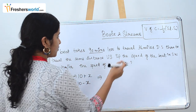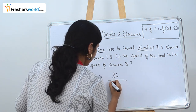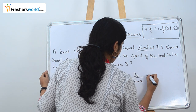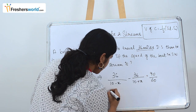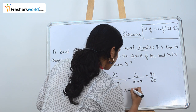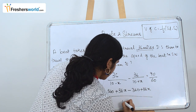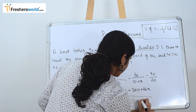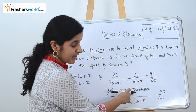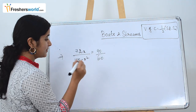The distance to travel is 36 miles, so: 36 divided by (10 minus x) minus 36 divided by (10 plus x) equals 90 by 60. Cross-multiplying: (360 plus 36x minus 360 plus 36x) divided by (10 minus x)(10 plus x) equals 90 by 60. The 360s cancel, leaving 72x divided by (100 minus x squared).